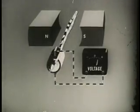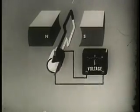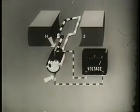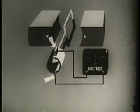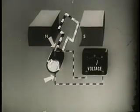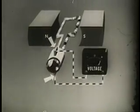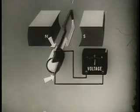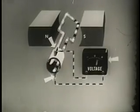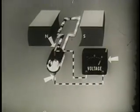Stationary contacts — carbon brushes — ride on the commutator segments. They provide a means of connecting a meter or any other load to the generator.